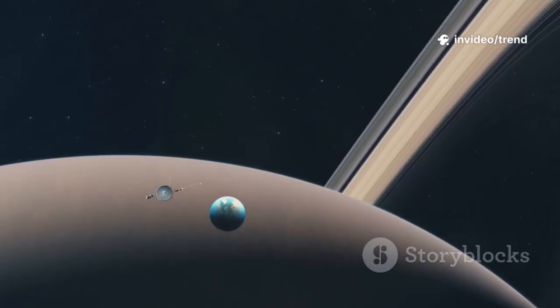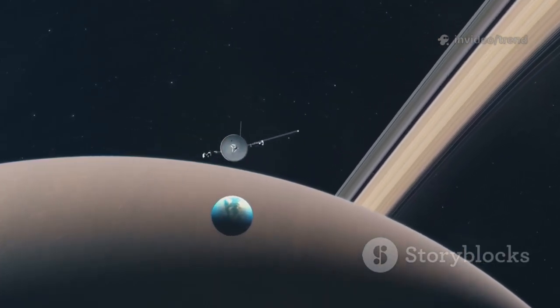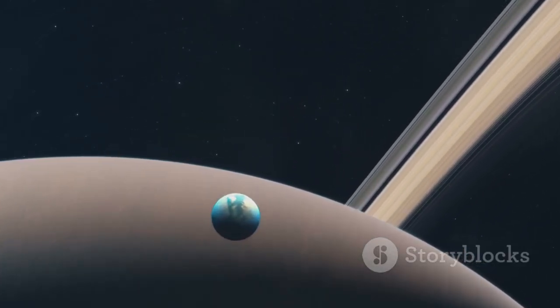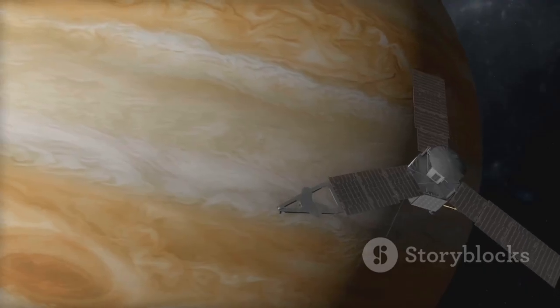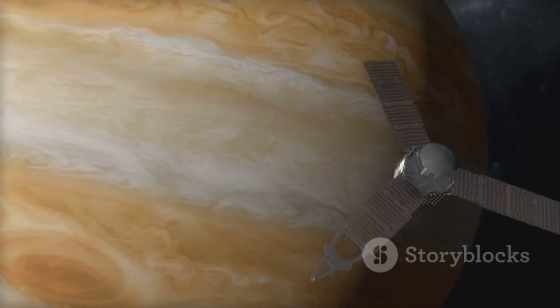Among the boldest of these was Voyager 1, launched in 1977 as part of a grand tour of the outer solar system. Its mission: to visit Jupiter and Saturn, sending back images and data that would forever change our understanding of these distant worlds.